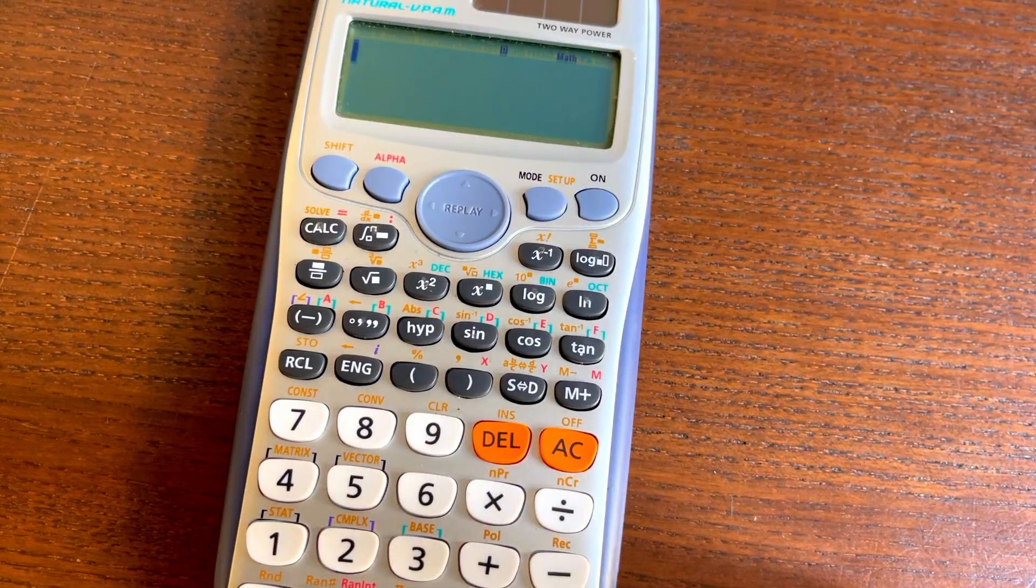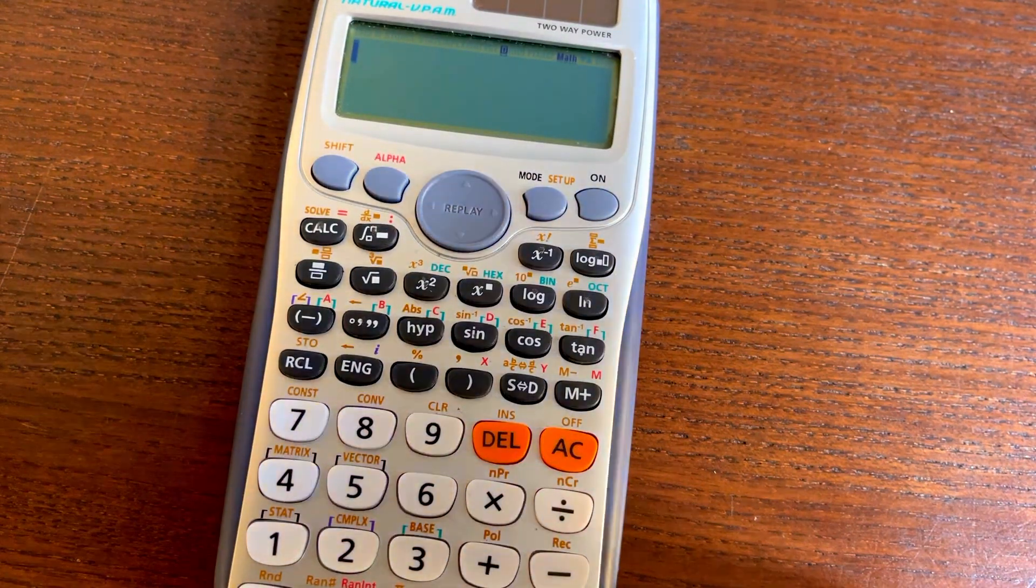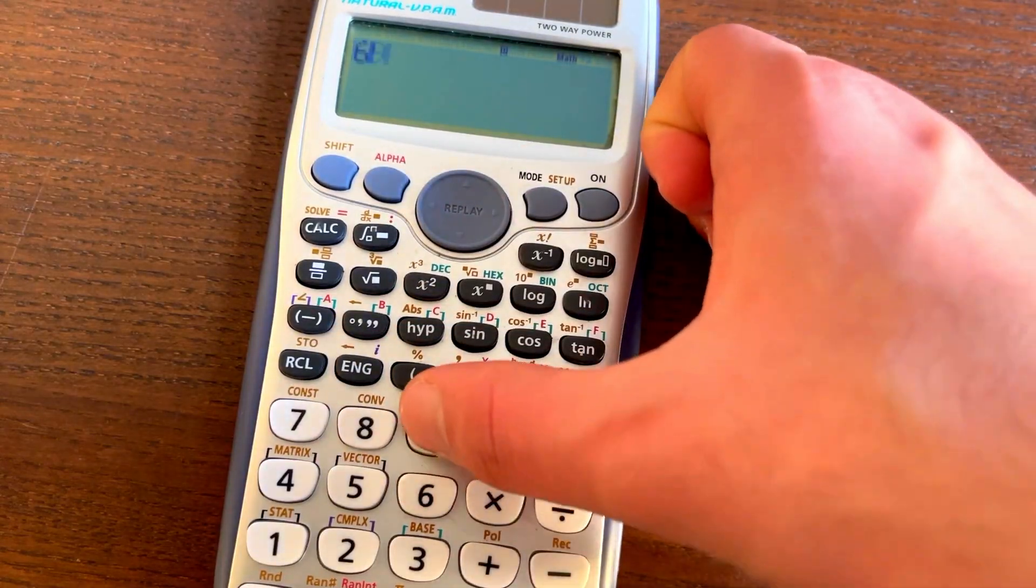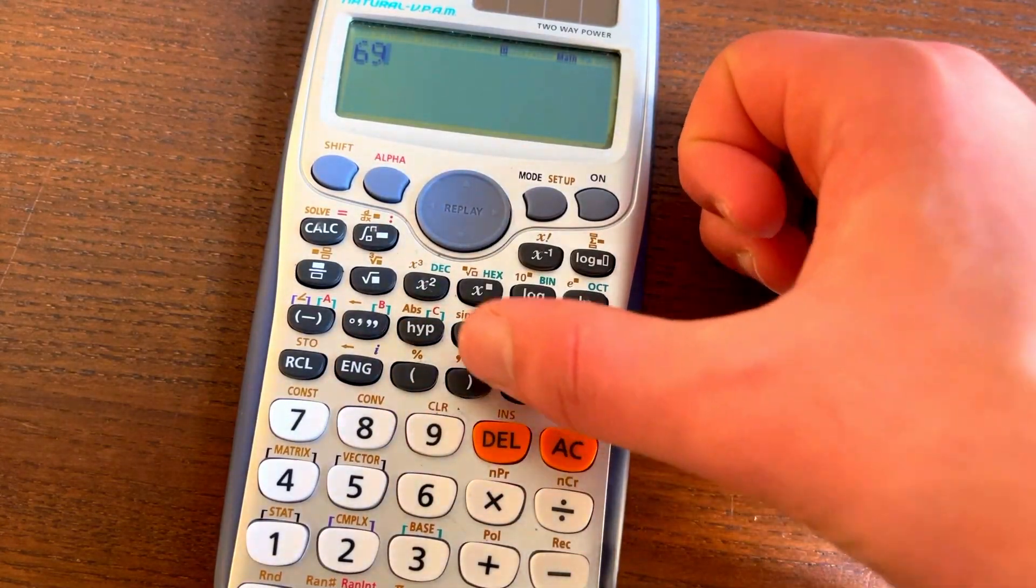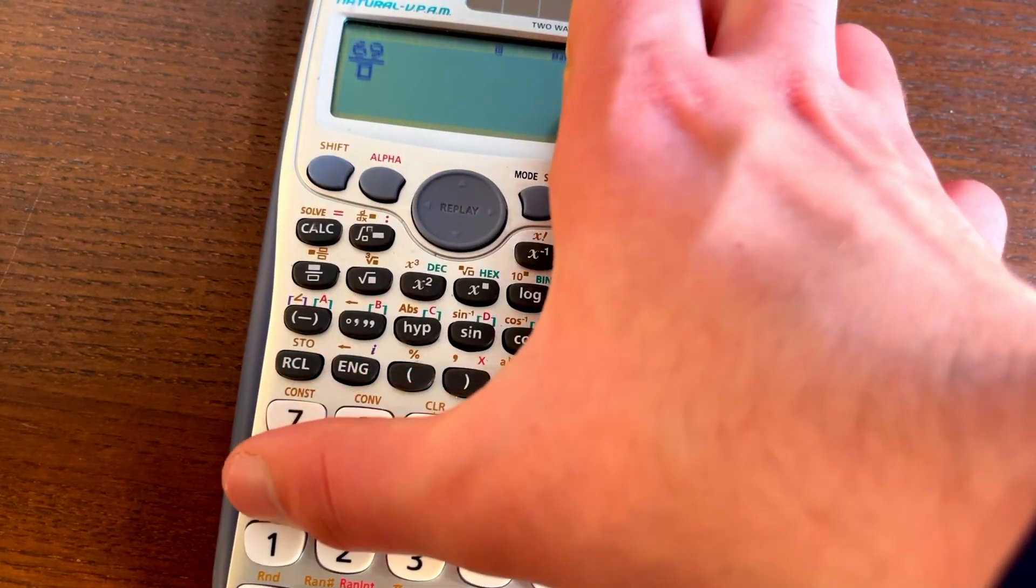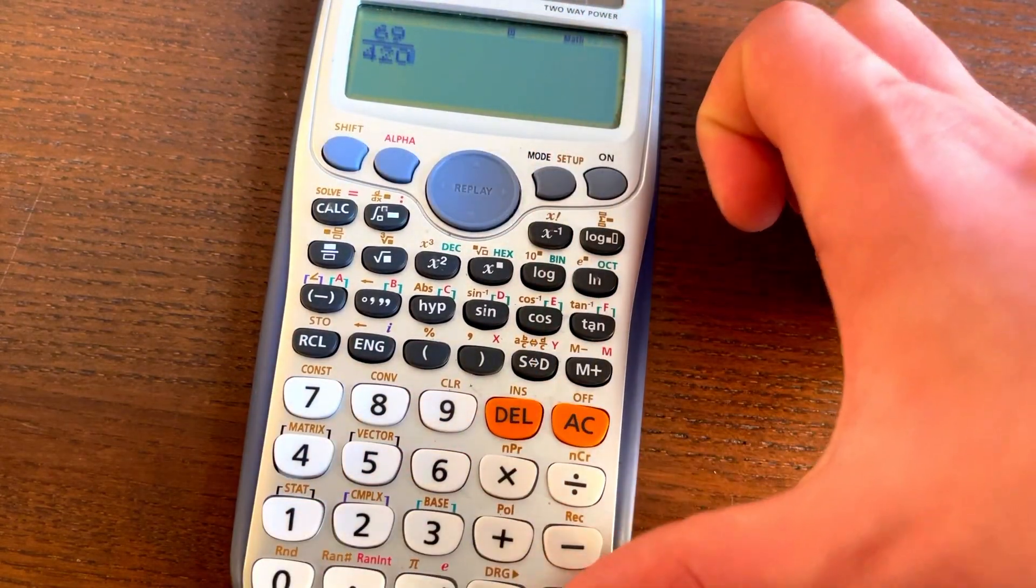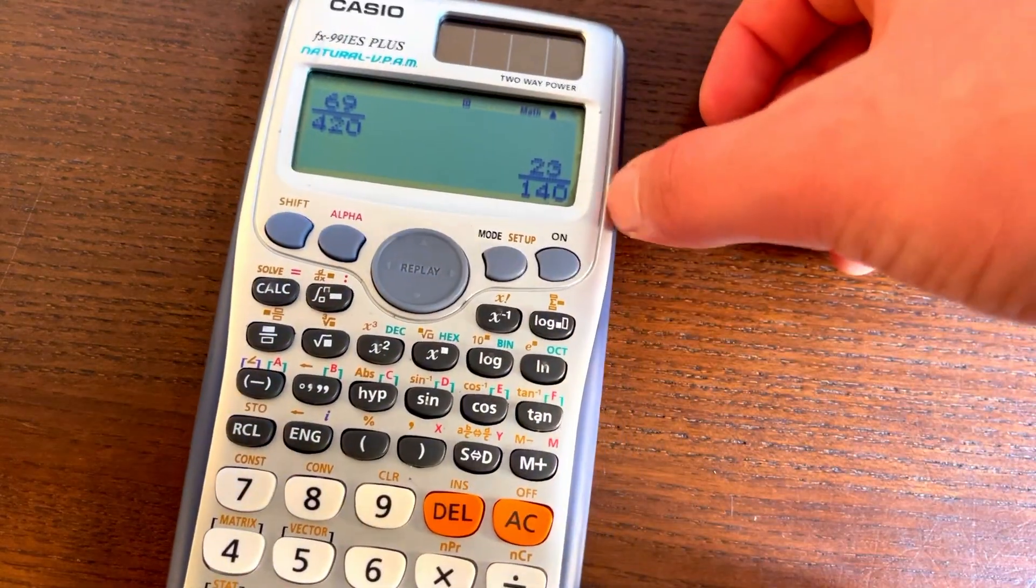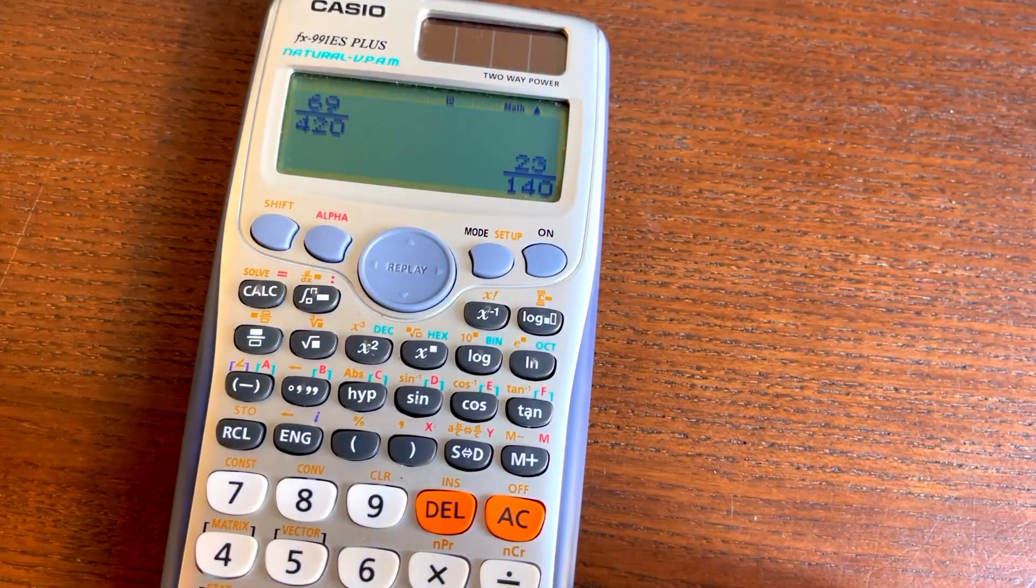Simplifying fractions is really annoying, but the calculator can do it really, really fast. All you have to do is give in your fraction, so for example, 69 over 420, and then we can click equals, and look at that, it's already converted it to as simple as it can be.